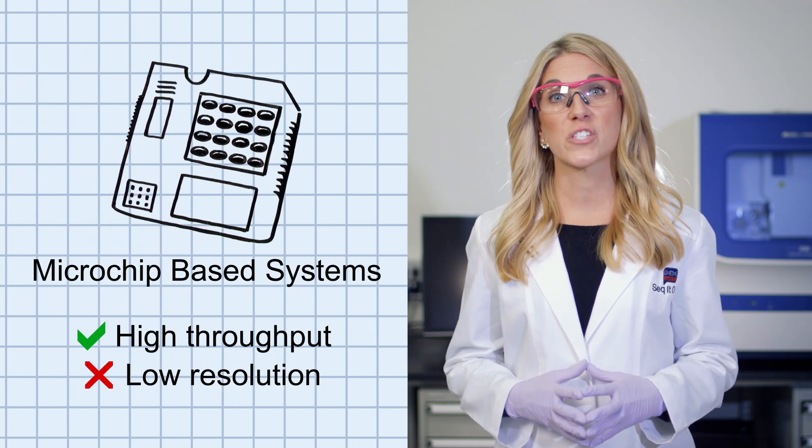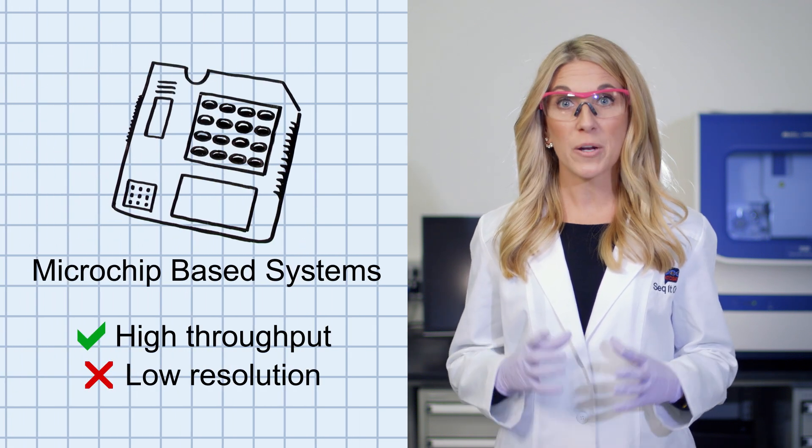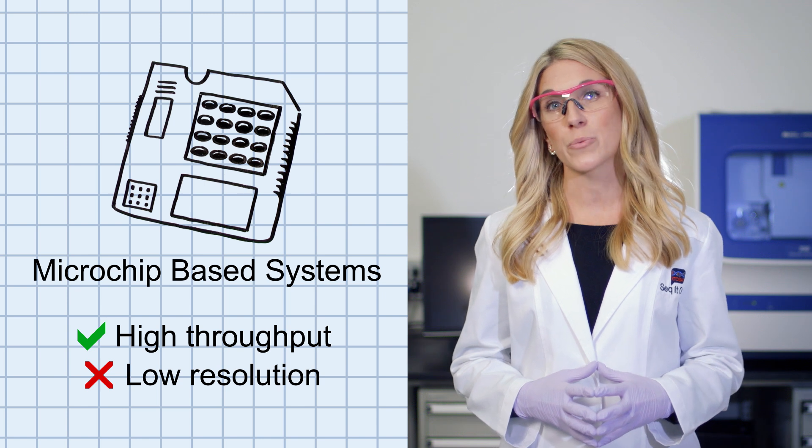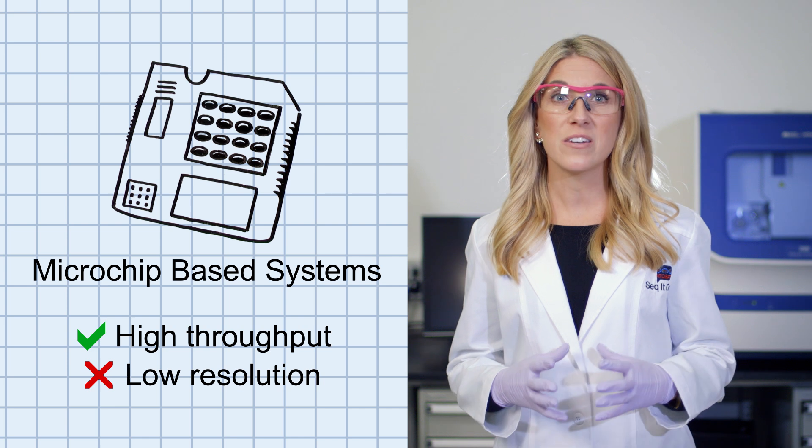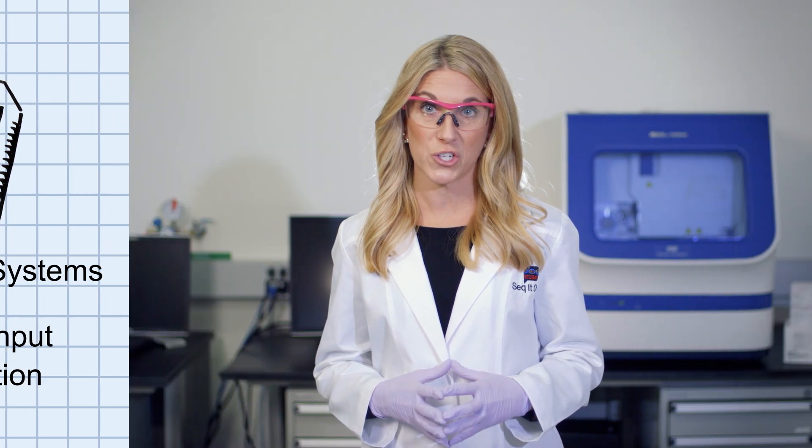Microchip-based systems have solved the low-throughput problem, but only at the expense of data quality and resolution. Because of a short separation window, microchip-based methods cannot provide high-resolution of separation. This means that you have to choose multiple platforms in order to get both high-throughput and high-resolution.